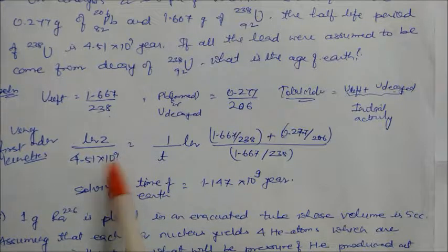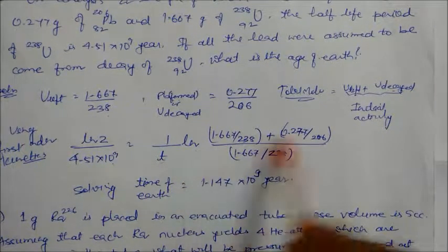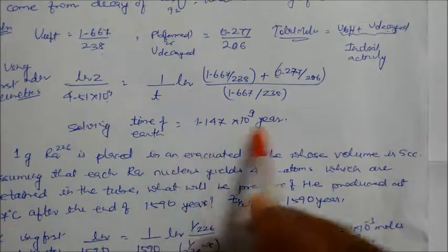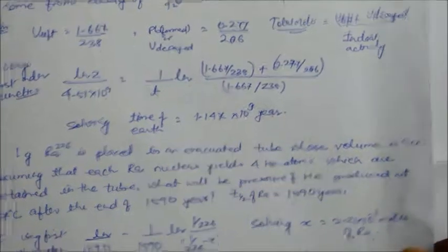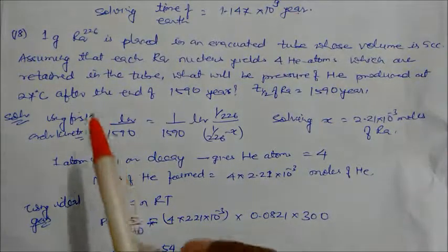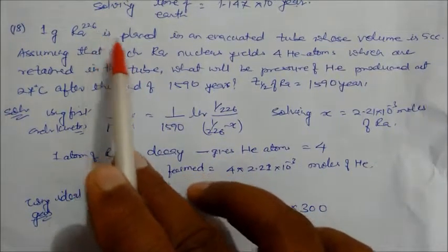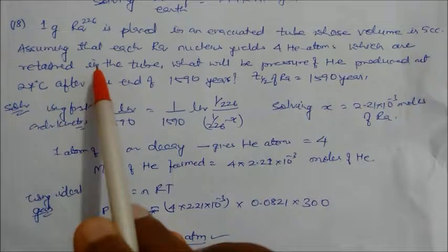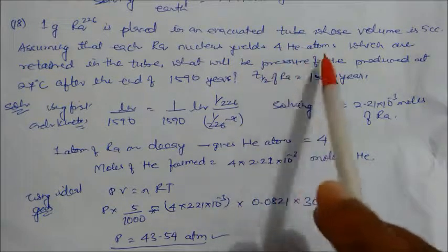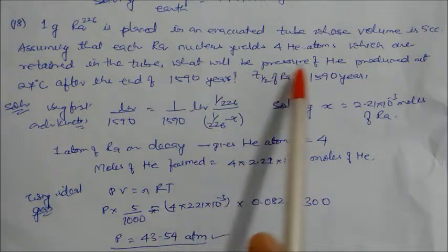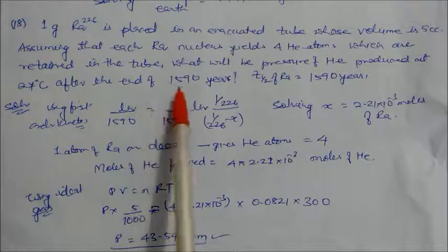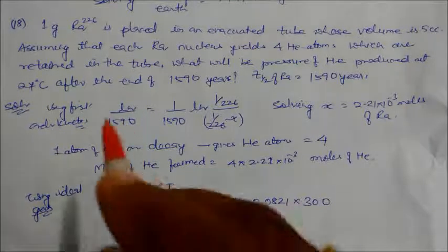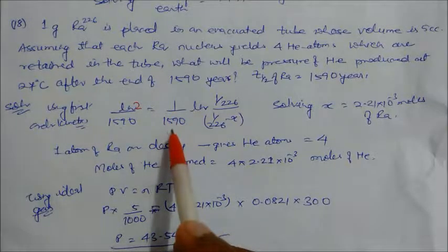Problem 18: 1 gram of radium-226 (molar mass 226) is placed in an evacuated tube of volume 5 cc. Assuming each radium nucleus yields 4 helium atoms retained in the tube, find the pressure of helium at 27°C after 1590 years. Half-life of radium is 1590 years. Using first order kinetics, calculate radium decayed. Moles of helium formed = 4 × moles of radium decayed. Applying the ideal gas equation PV = nRT with T = 300 K and V = 5 cc, the helium pressure is 43.54 atm after 1590 years.